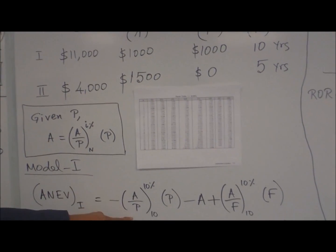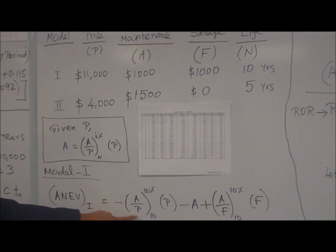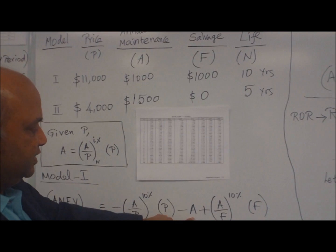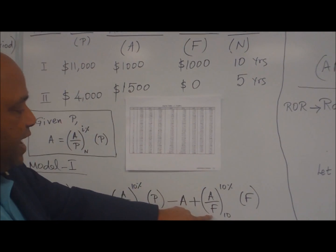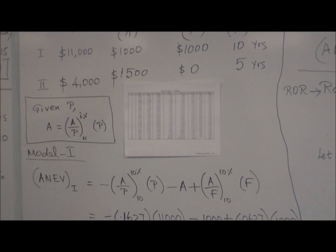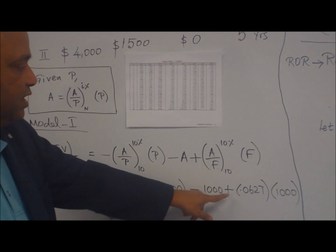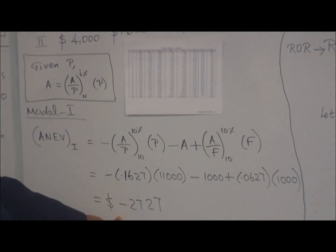Because P is given, you have to find equal annual A. So A/P at 10%, here is 10%, times P minus A. Straightforward, you can use that to convert F to A: (A/F) times F. Now you can go to the table, pick these values, factor times 11,000 minus 1,000 plus this factor from the table times 1,000. You get minus $2,727.